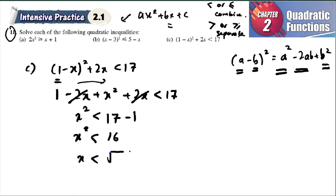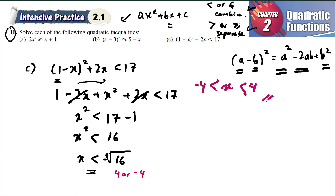So x² + 1 < 17. Bring 1 to the right: x² < 16. Taking the square root: x < ±4. As with examples A and B — smaller than means the range is combined. You get two values, 4 or negative 4. So the range of x is combined: negative 4 < x < 4.